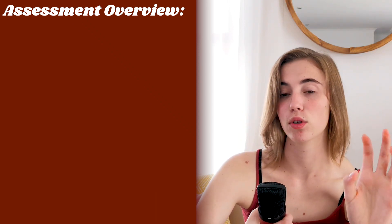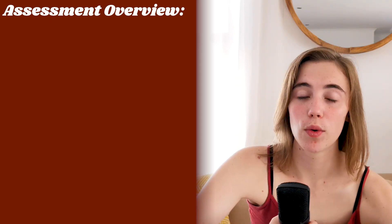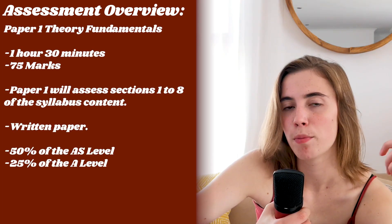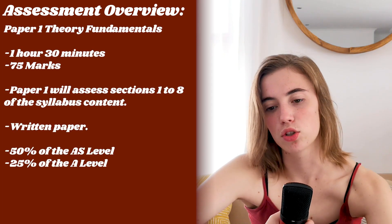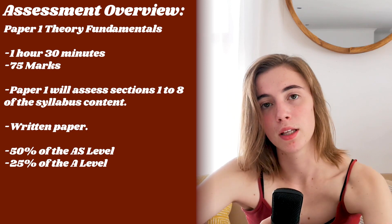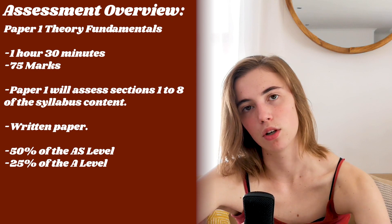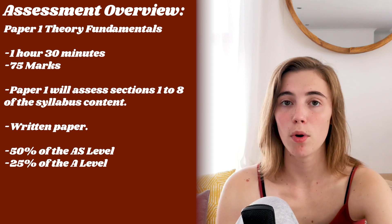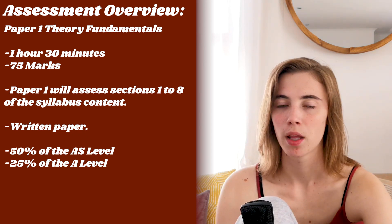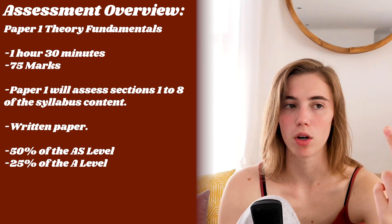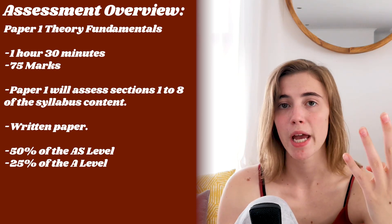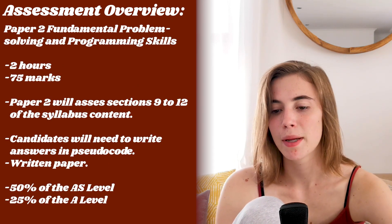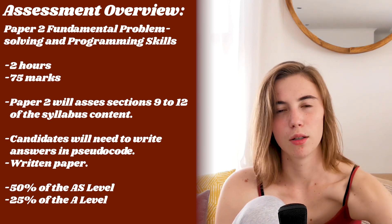Now the assessment overview. There are two papers for the AS level — whether you're doing the AS only route or the first year of the A level route. Paper one is Theory Fundamentals: one hour and 30 minutes long, 75 marks, covering sections one to eight of the syllabus. It's a written paper and counts for 50% of your AS level mark and 25% of your A level mark.